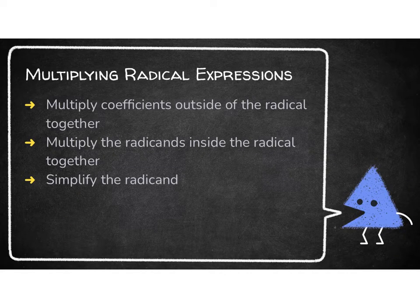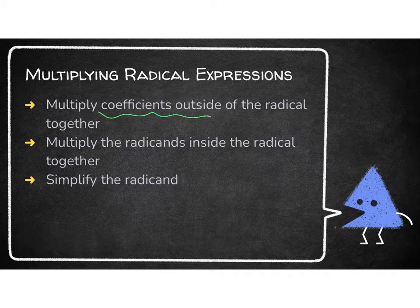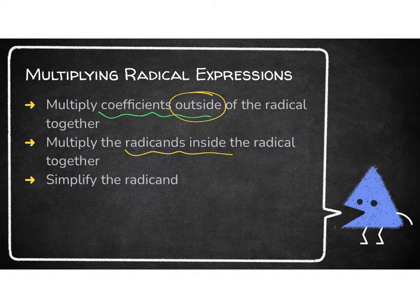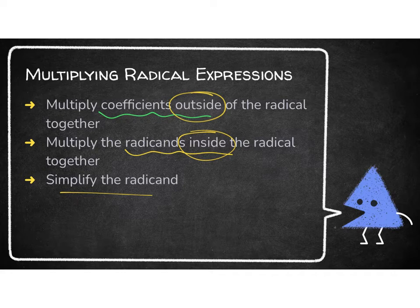When we are multiplying radical expressions, we are going to multiply two parts. We're going to multiply the coefficients on the outside, and we're going to multiply the radicands on the inside. Outsides go together, and insides go together. Then once we've done both of those two things, we need to simplify, just like we've been doing for the last few lessons.